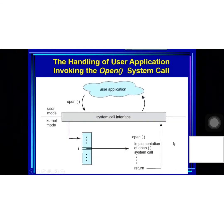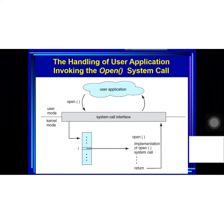The caller need know nothing about how the system call is implemented or what it does during execution. Rather, the caller need only obey the API and understand what the operating system will do as a result of the execution of the system call. Thus, most of the details of the operating system interface are hidden from the programmer by the API and are managed by the runtime support library.